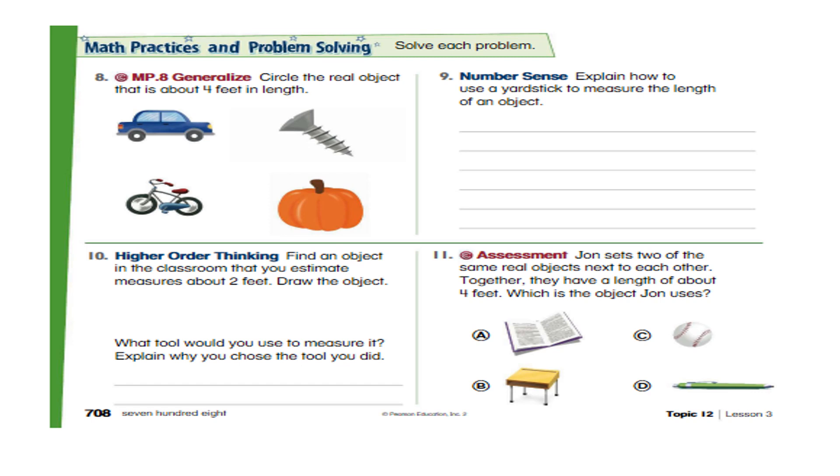Now, find an object in your room that you estimate measures about two feet. Draw the object. So, look around and search for any object that you think is about two feet. Draw it here. And then what did you use to measure the object? The tool. The tool means you use a ruler. Did you use a measuring tape? Or did you use a yardstick?